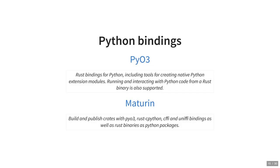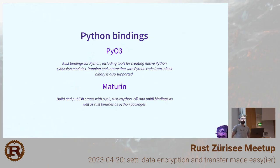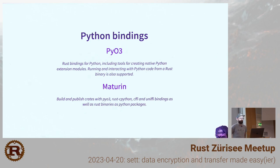The second big enabler was PyO3, which provides a very easy way to expose Rust functions and structs to Python and use them as you would any other Python code. There's also a sister project called Maturin which greatly simplifies the deployment part. Given a Rust project with some PyO3 code, you can build it into Python packages that you simply pip install.